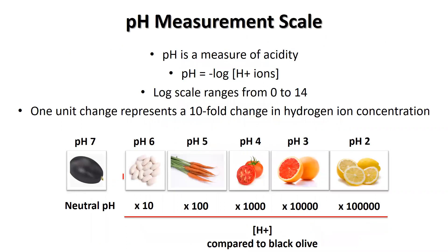pH is essentially a measure of acidity. pH is the negative log of hydrogen ions in a solution or in a food, and pH is measured on a log scale from 0 to 14. This means each unit change represents a tenfold change in the hydrogen ion concentration.